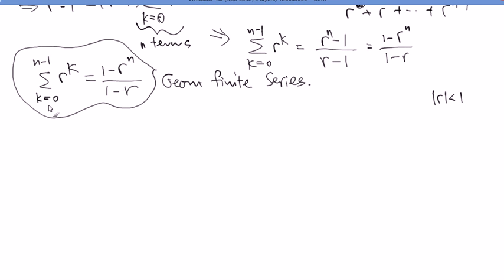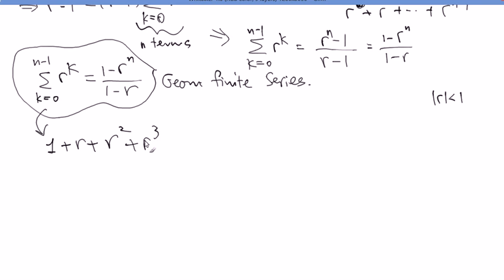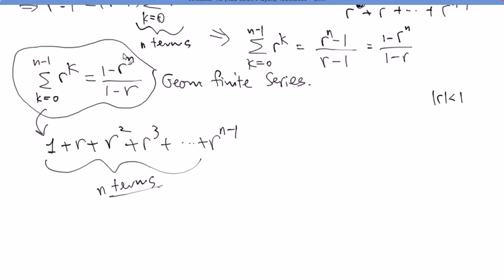Let's expand this one more time. The very first term is r^0 equals 1. You multiply by r to get to the next term, then multiply by r again — keep multiplying r each time. What's important is how many things are written down — n terms. That number appears right in the formula. The r on the right-hand side is the ratio you multiply to get to the next term.